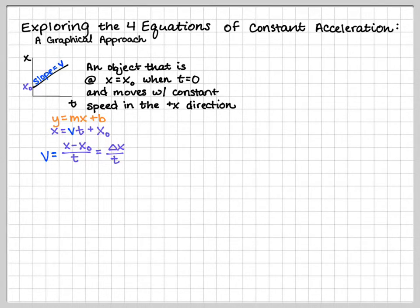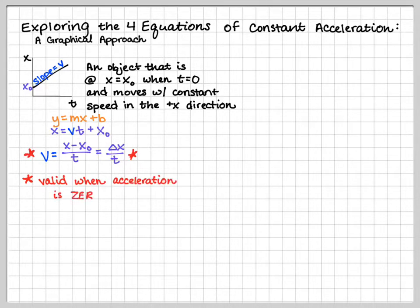If we rearrange this a little bit, we can say that v is equal to the change in x over t, which is the definition of average velocity. It's important to note that this particular velocity equation is only valid when acceleration is 0 — when your object is not accelerating, not speeding up or slowing down, or changing direction.